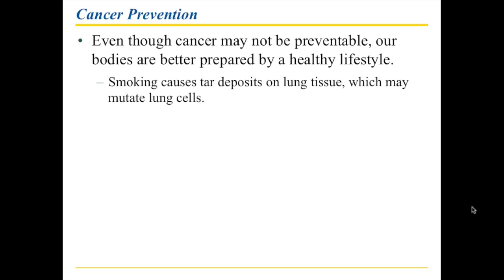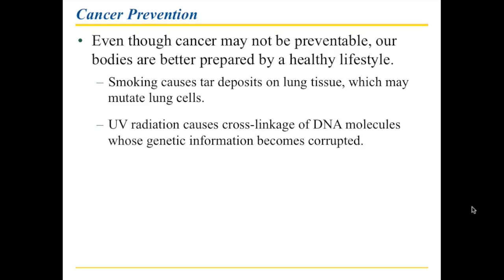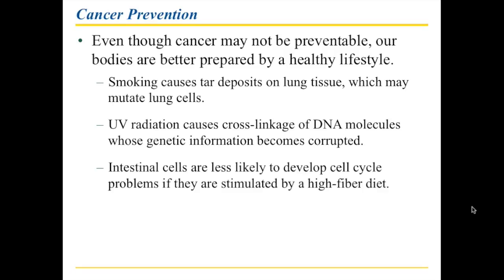There are a couple of fairly obvious things. Smoking, for example, clearly causes tar deposits on lung tissue — these tar deposits are carcinogenic and may mutate lung cells. Second, ultraviolet radiation causes cross-linkage of DNA molecules, and if you have DNA molecules with missing bits of genetic information, that may affect the cell cycle and could be a problem. Lastly, regarding intestinal cells: a high-fiber diet helps scrape out parts of your intestine regularly, meaning much more cell renewal compared to having older cells that never get cleaned out.